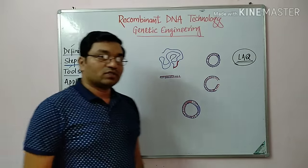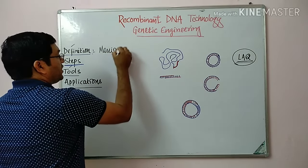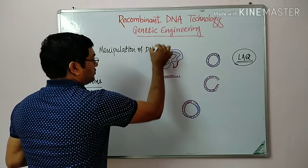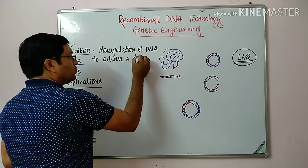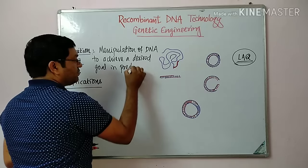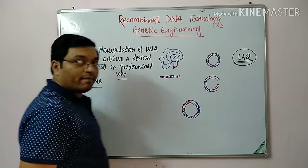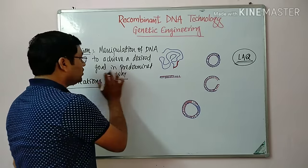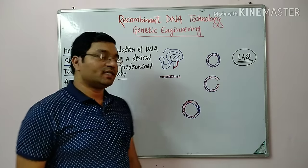In recombinant DNA technology, it involves manipulation of genetic material — that is, DNA — to achieve a desired goal in a predetermined way. So this is a gene manipulation technique in which manipulation is done to achieve a desired goal in a predetermined way. Now coming to the steps involved in recombinant DNA technology.